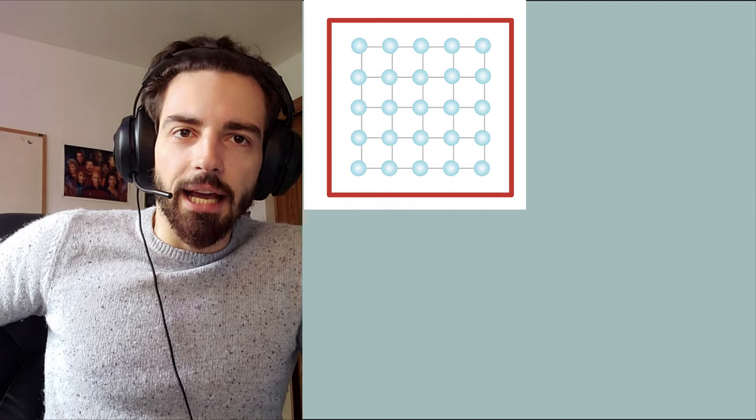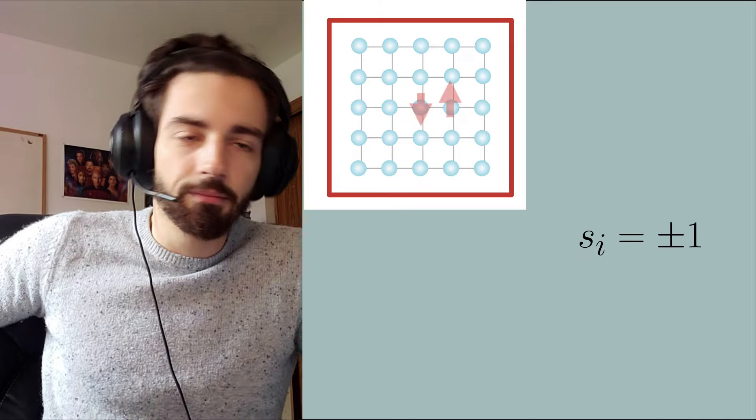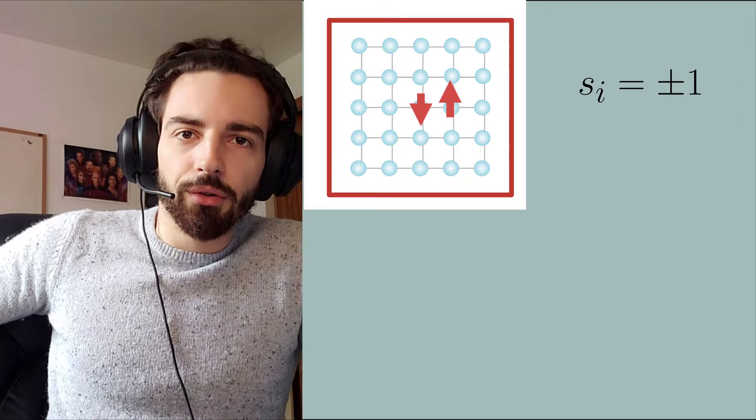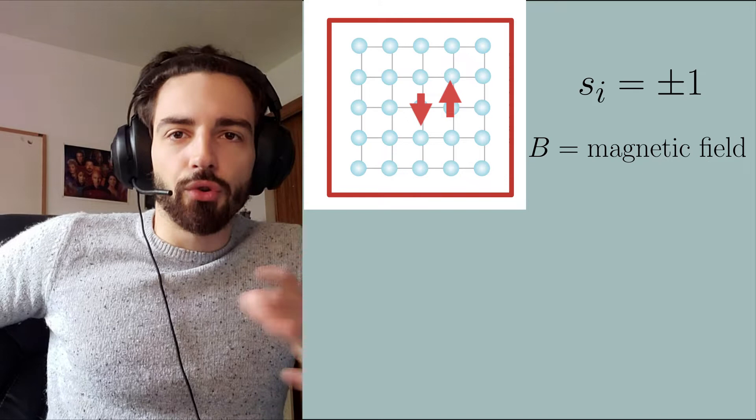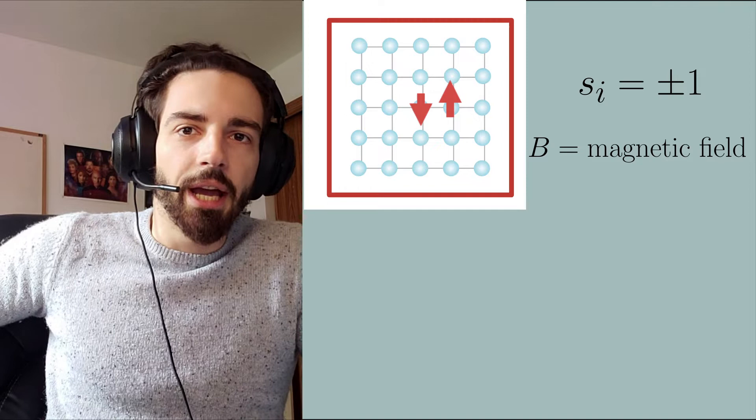The Ising model describes a lattice of N magnetic particles with classical spins s_i = ±1. They can either be up or down, subject to an external magnetic field that induces a magnetization B. We will let the system be isotropic and this means that the interaction between all sites is the same, so we have the interaction energy.